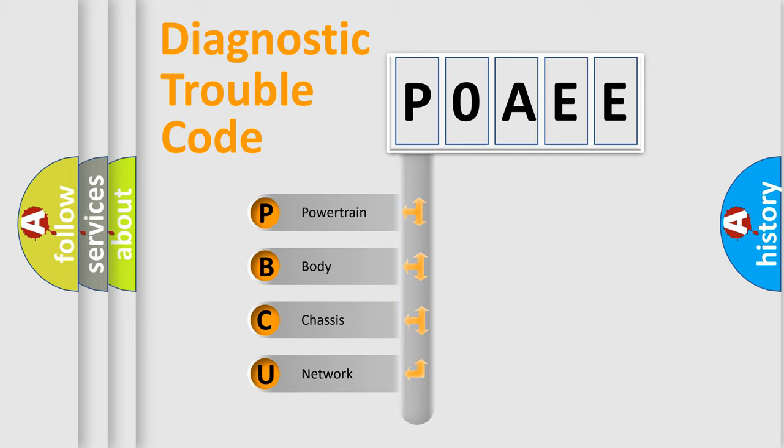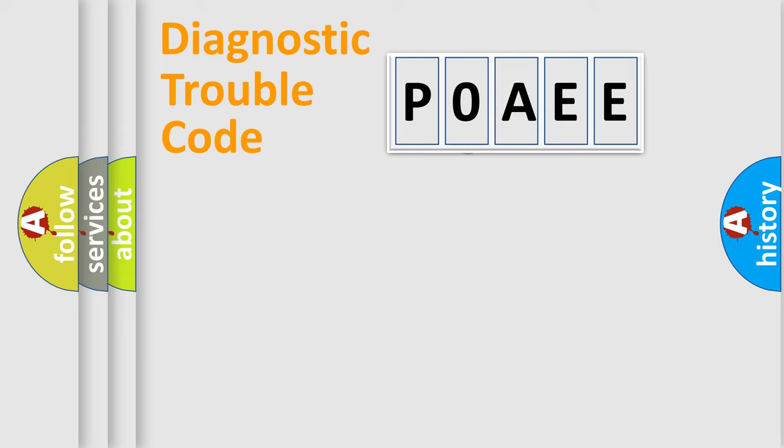We divide the electric system of automobiles into four basic units: Powertrain, Body, Chassis, and Network. This distribution is defined in the first character code.